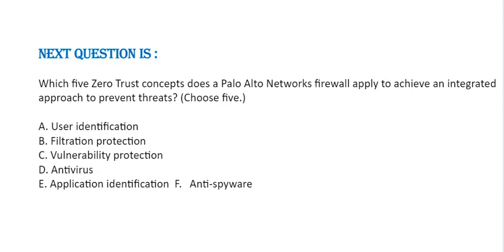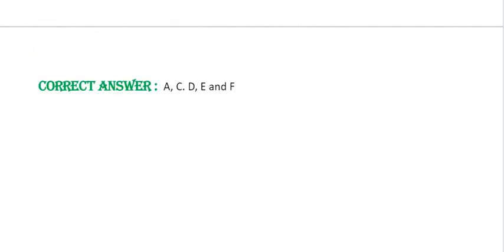Next question: Which five Zero Trust concepts does a Palo Alto Networks firewall apply to achieve an integrated approach to prevent threats? Choose five options. Option A: User identification. Option B: Validation protection. Option C: Policy safety trust. Option D: Antivirus. Option E: Application identification. Option F: Anti-spyware. Correct answer is Option A, C, D, E, and Option F.